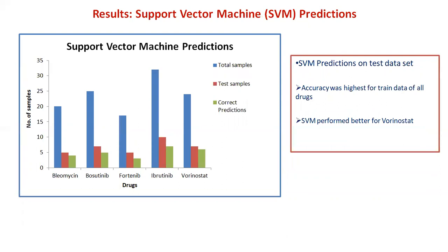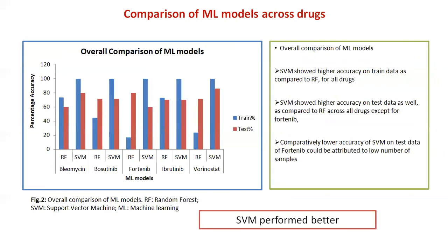SVM focuses on separating points that lie near the boundary between classes. The results of SVM were: 4 out of 5 correct predictions for bleomycin; 5 out of 7 for positinib; 3 out of 5 for fortinib; 7 out of 10 for ibrutinib; and 6 out of 7 for vorinostat. SVM performed better for vorinostat. As compared to random forest, SVM performed better in terms of accuracy for all drugs except fortinib, which had a very low number of samples. Overall, SVM performed better than random forest.